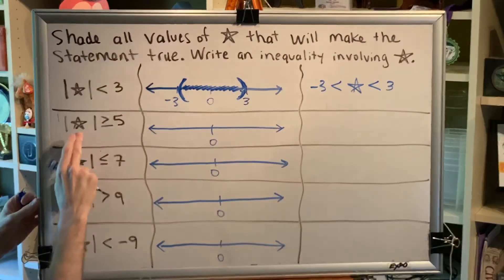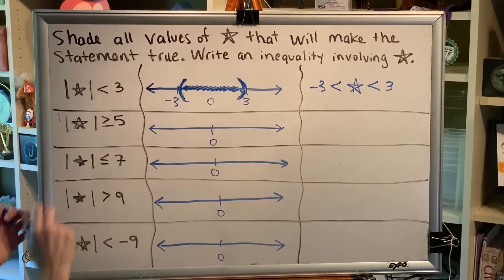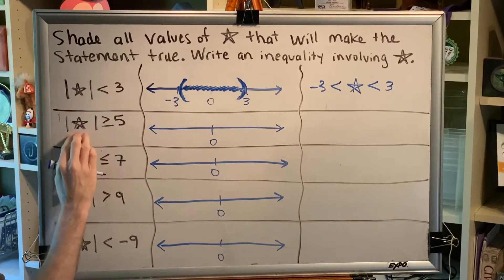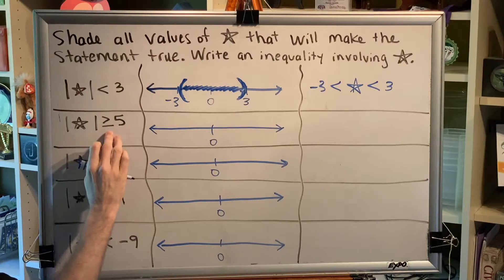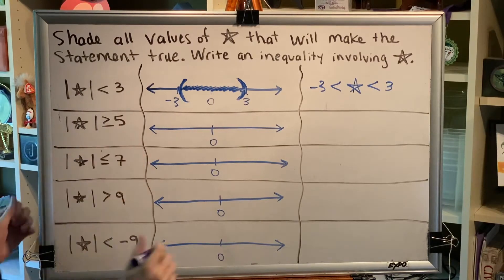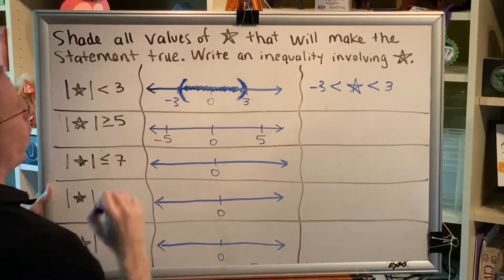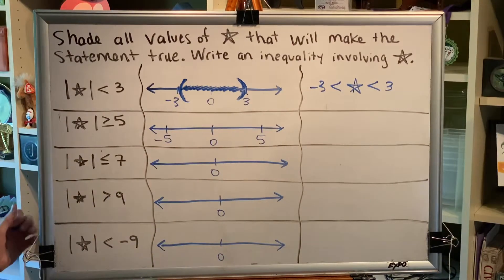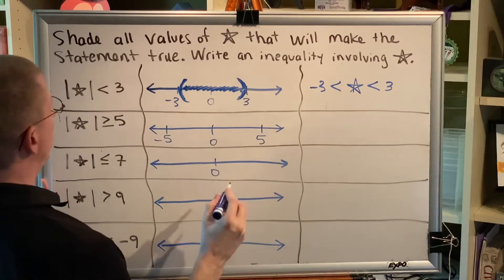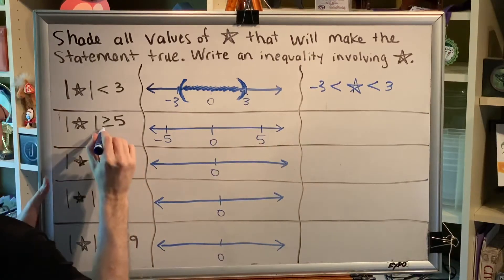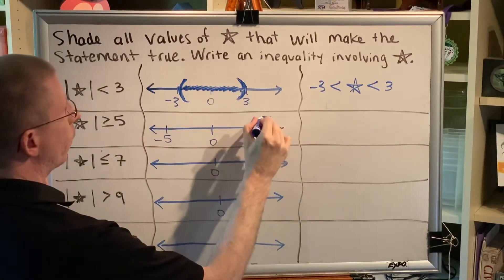Next problem. The absolute value of star is greater than or equal to 5. This is like saying that the distance has to be greater than 5. It's like you're being guarded. So imagine the celebrity is at 0 and the bodyguards are all around. So you have to be five steps or more from that celebrity.